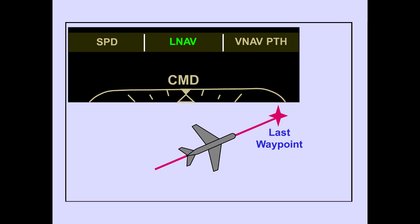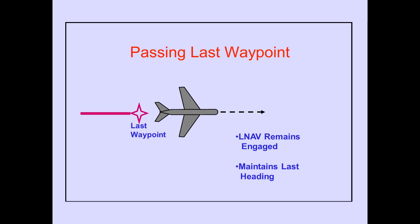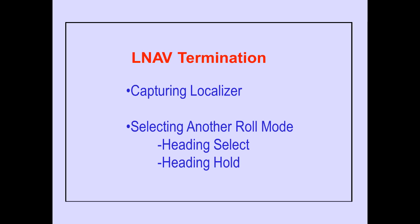Once LNAV is engaged, the autopilot is directed to fly the active route to the last route waypoint. If the airplane passes over the last route waypoint, LNAV remains engaged and commands the airplane to maintain the last heading. LNAV is terminated by capturing the localizer or selecting another roll mode, such as heading select or heading hold.